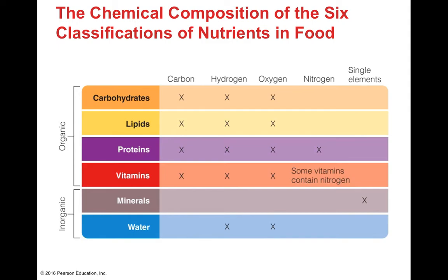Looking at the chemical composition of the six nutrient classifications — carbohydrates, lipids, proteins, vitamins, minerals, and water — four contain carbon, five contain hydrogen, five contain oxygen, nitrogen is found in proteins and some minerals, and single trace elements are found in the minerals.